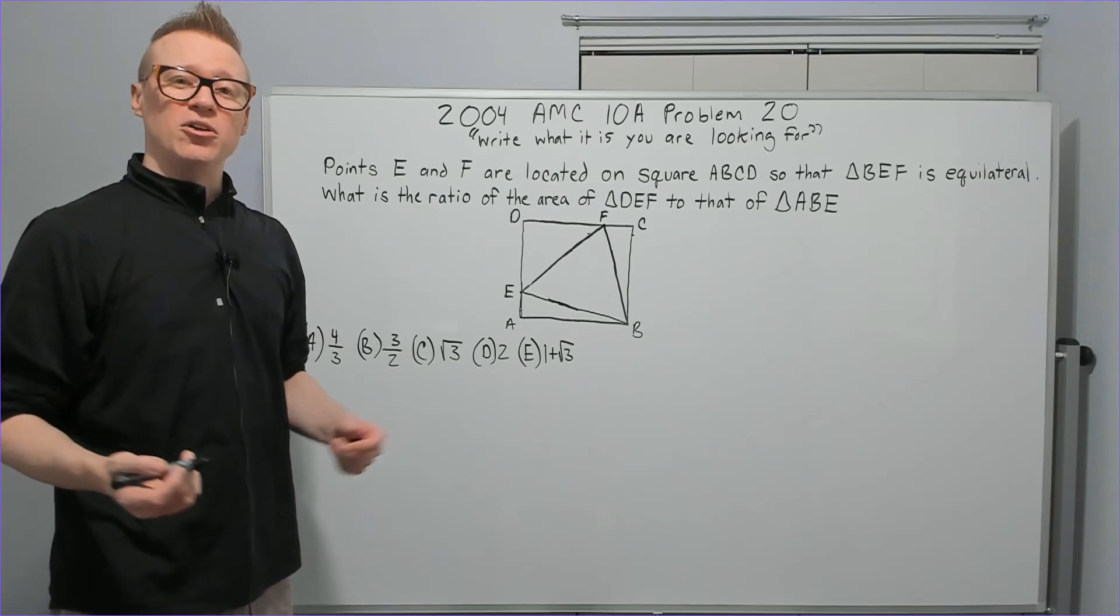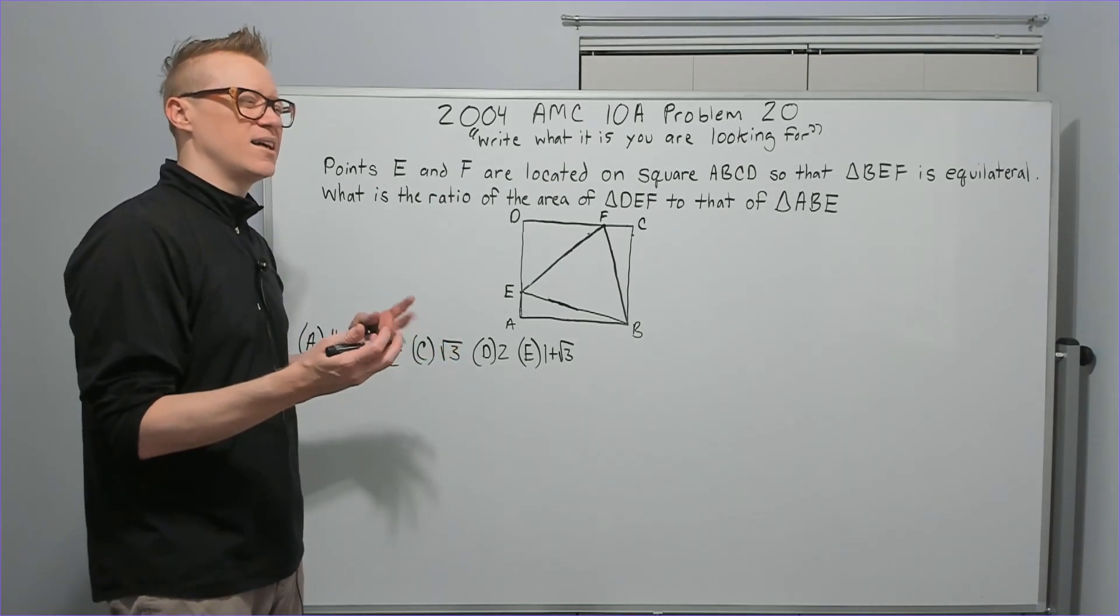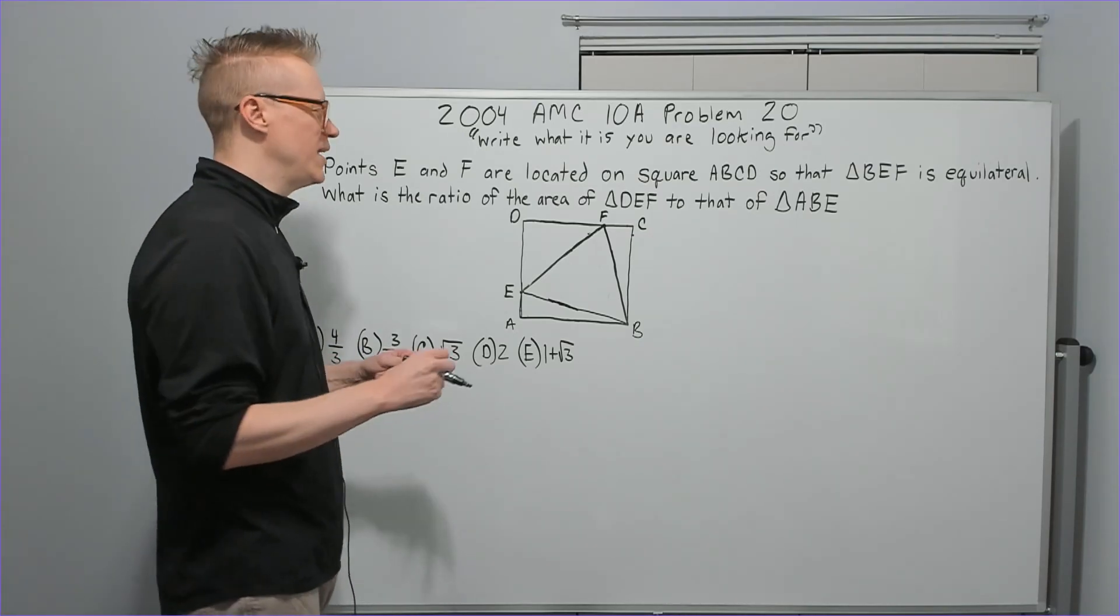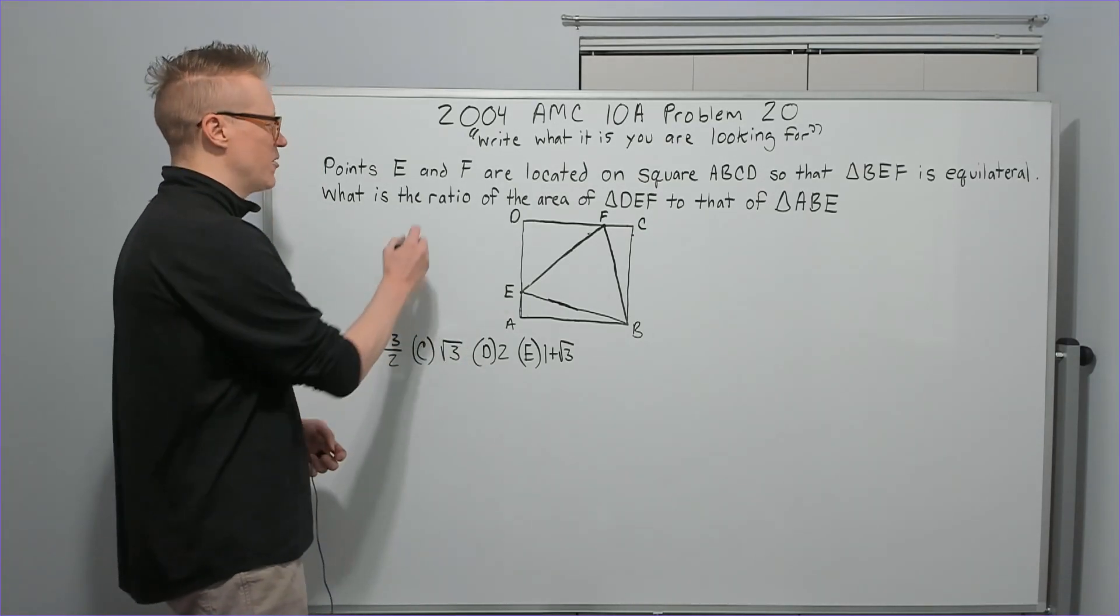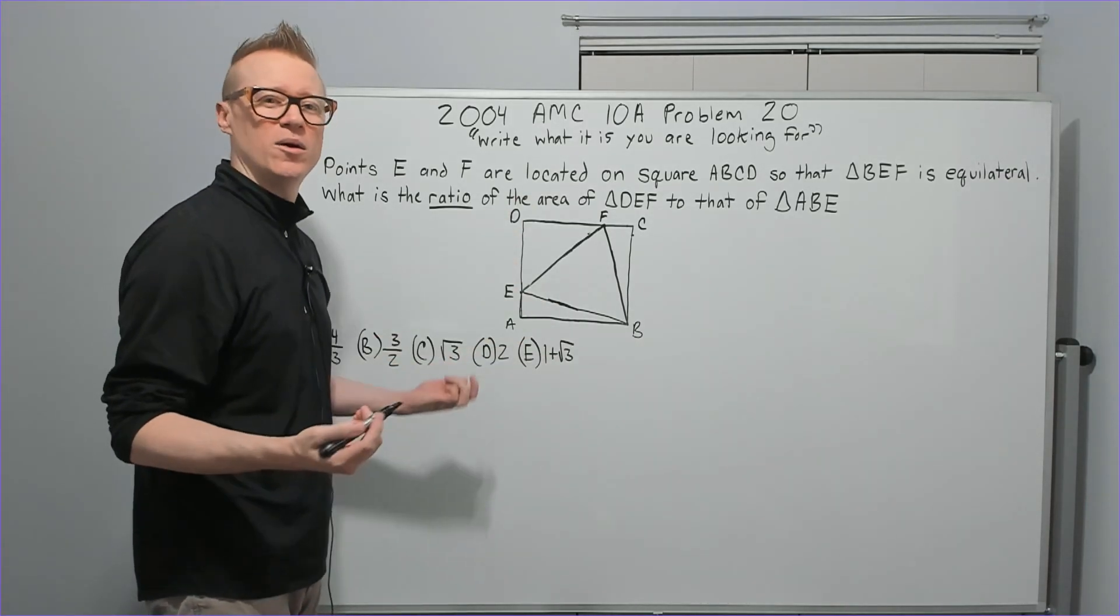The first thing you're going to notice is there's no lengths. And when there's no lengths, a lot of times we kind of panic a little bit, but you probably shouldn't. In fact, ratios give us something we can do. You can usually pick one of the values you want to work with as one.